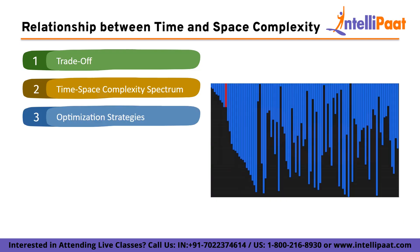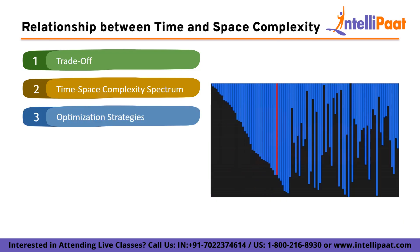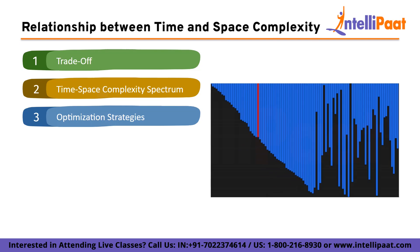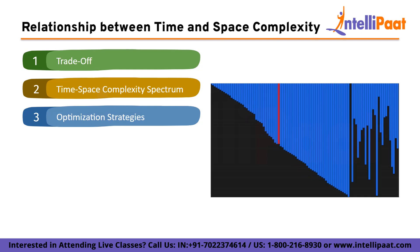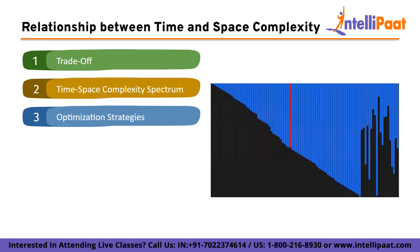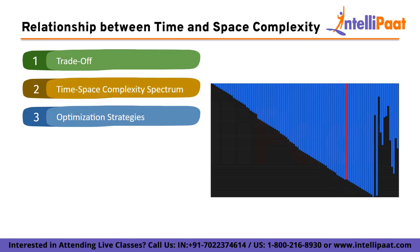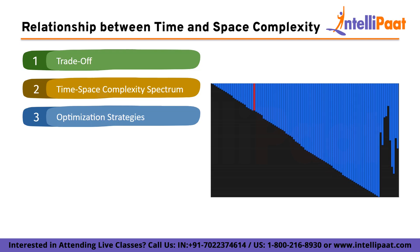Choosing between time and space optimization depends on the requirements of the problem at hand. Some problems may prioritize faster execution, while others may prioritize efficient memory usage. Algorithm designers must consider the specific constraints and objectives to determine the optimal balance between time and space complexity.